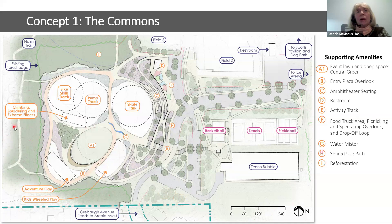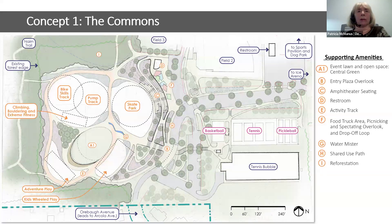The next questions are traffic-related. What did we mean by the raised crosswalk on the entrance drive, and would the county put a red light at the Orbach and Arcola intersection to make it easier to leave the park? Andrew Tsai, who handles projects related to Vision Zero and improving pedestrian and bicycle access, was asked to address these.